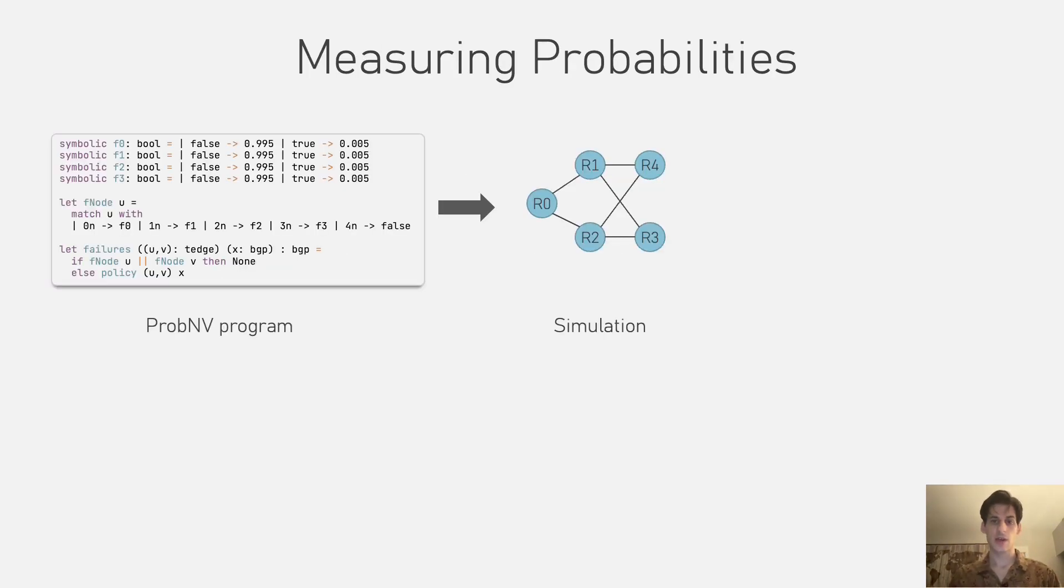To recap, given a model in PROB-MV, we can simulate the routing process, computing for each node the routes it has learned under different failure scenarios. And, as the simulation has completed, we can check network properties by computing boolean expressions over these routes.